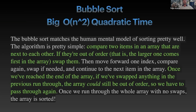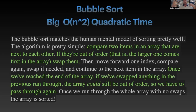I'm going to go into bubble sort, which is an easier algorithm to understand. It has a Big O of n-squared, which is quadratic time. Big O is basically a chart used to determine the efficiency of certain algorithms and how much time it would take them to complete calculations. It's a measurement of how long an algorithm takes to complete a certain task. Bubble sort matches the human mental model of sorting pretty well, so it's easier to understand.